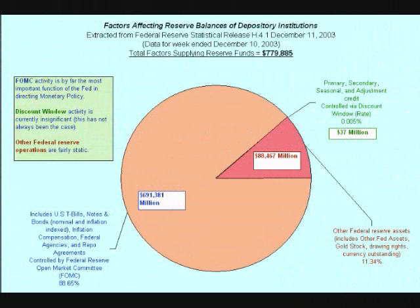The Fed has three main tools it uses to control the level of spending in the economy. The first is changing the reserve requirements for banks. The second is changing the discount rate. And the third is open market operations. Let's look at all three.